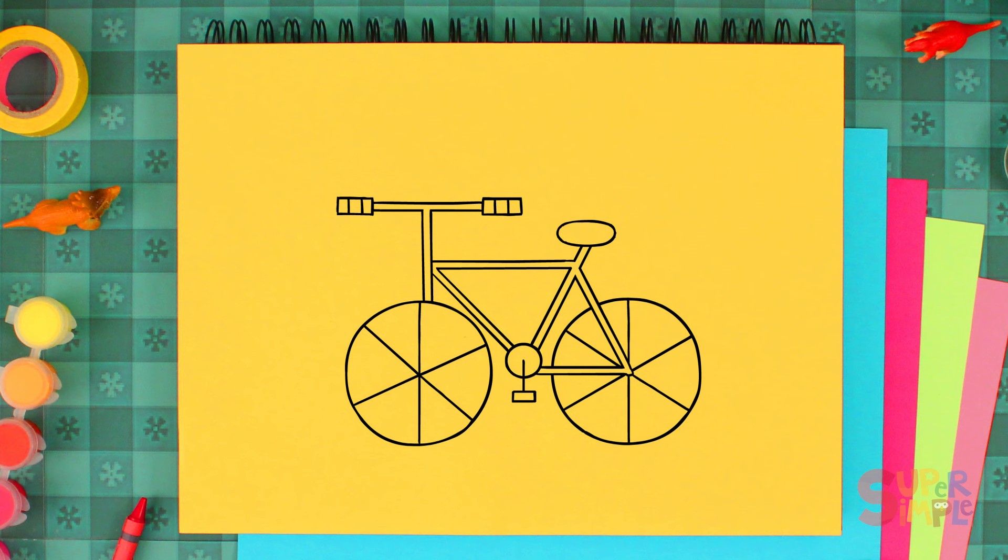Let's see. You can have a bell. Erase these small lines. And a basket on the front, so you can carry things.